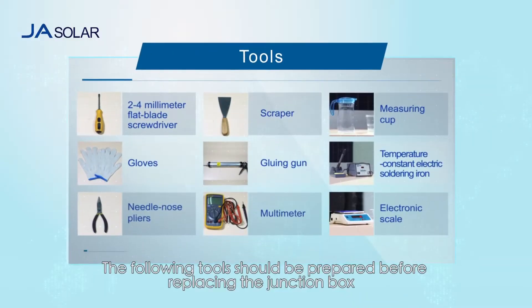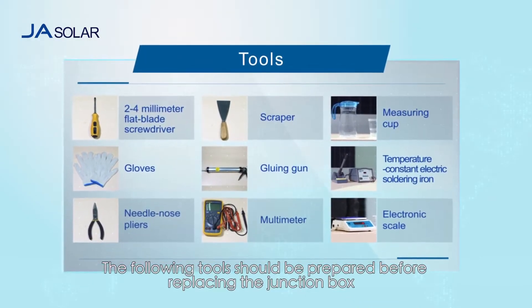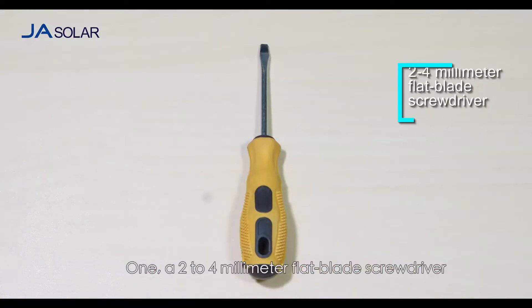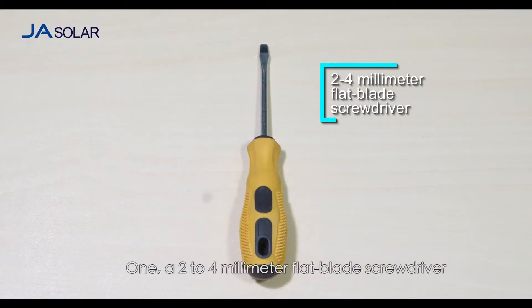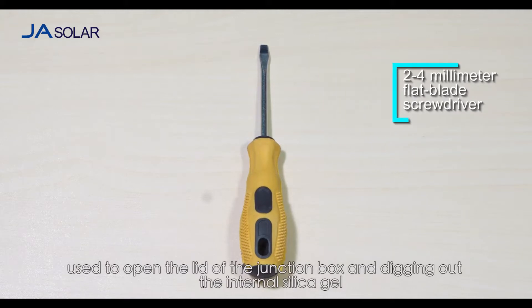The following tools should be prepared before replacing the junction box. First, a 2-4 mm flat blade screwdriver used to open the lid of the junction box and dig out the internal silica gel.